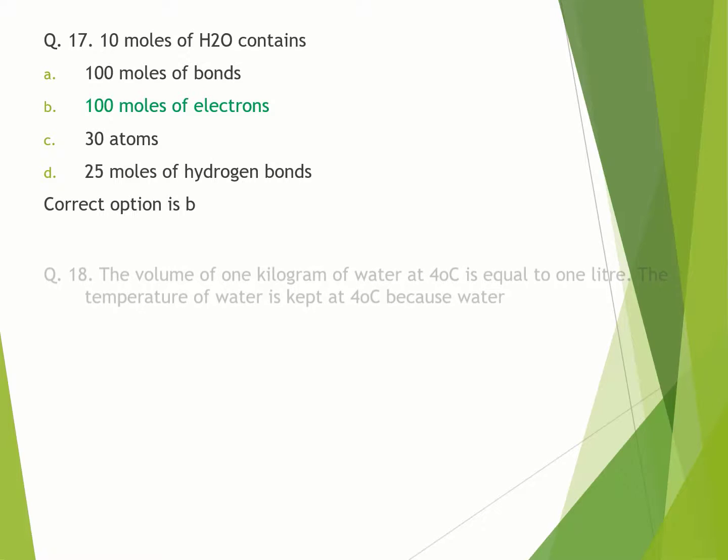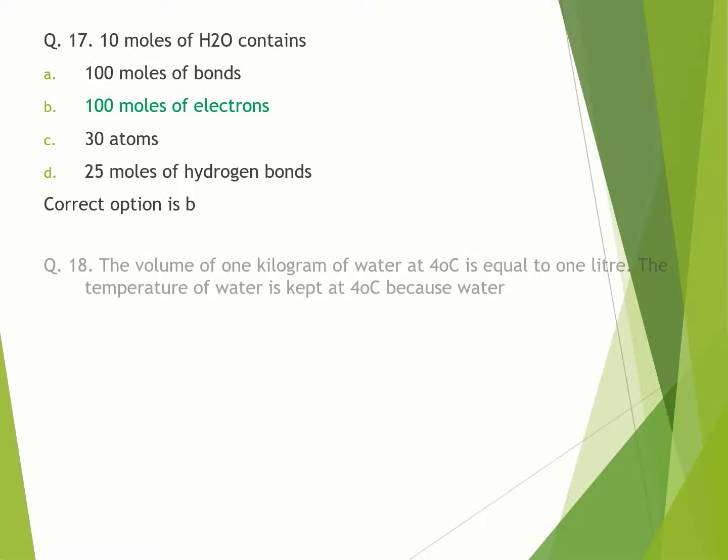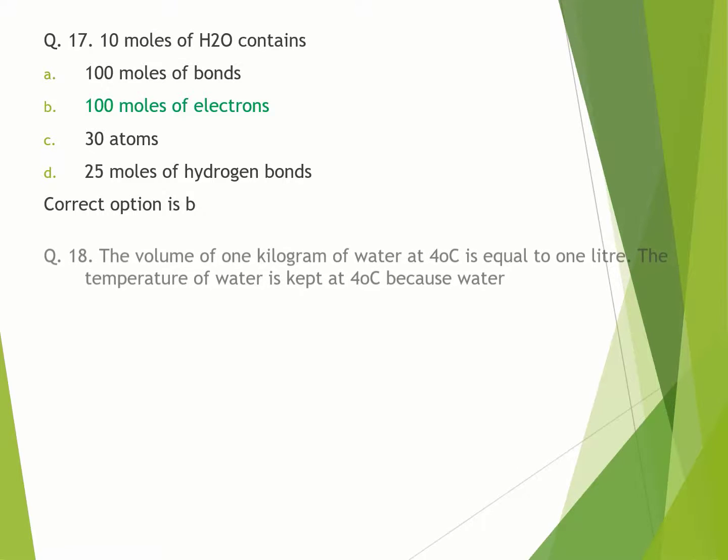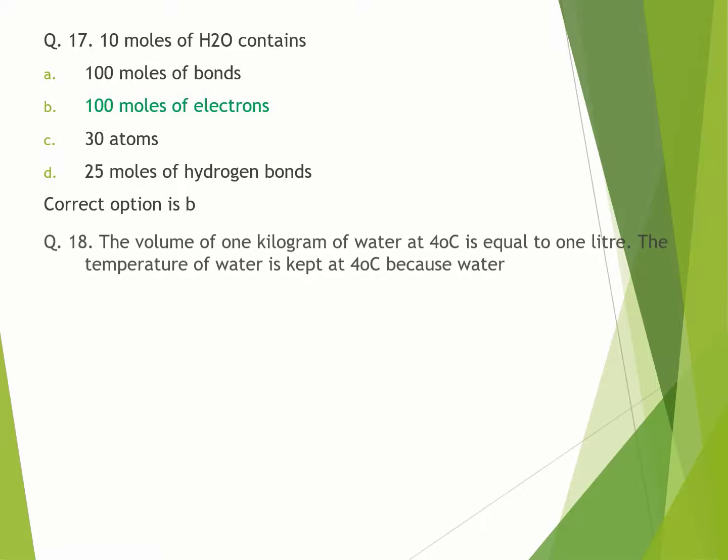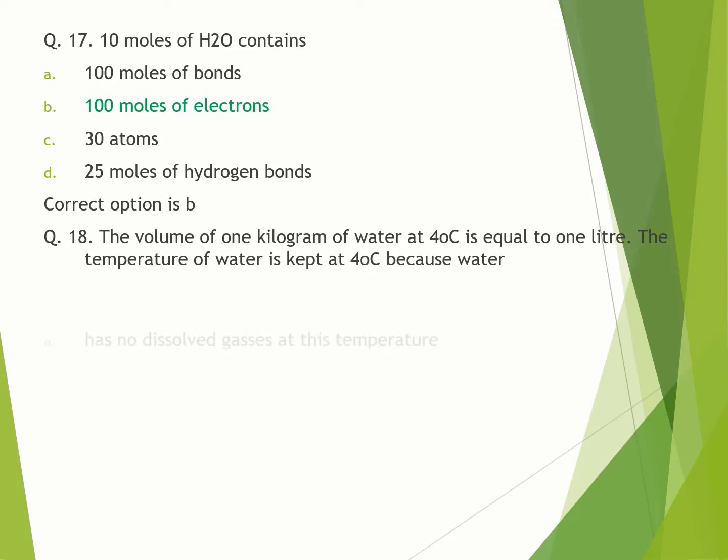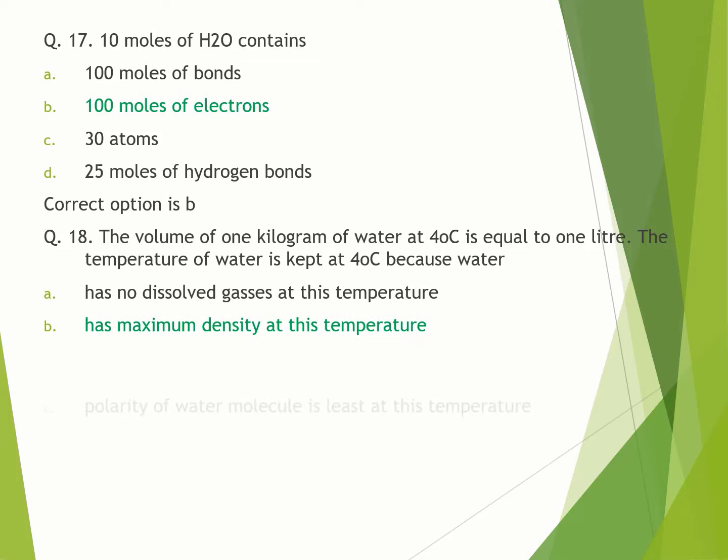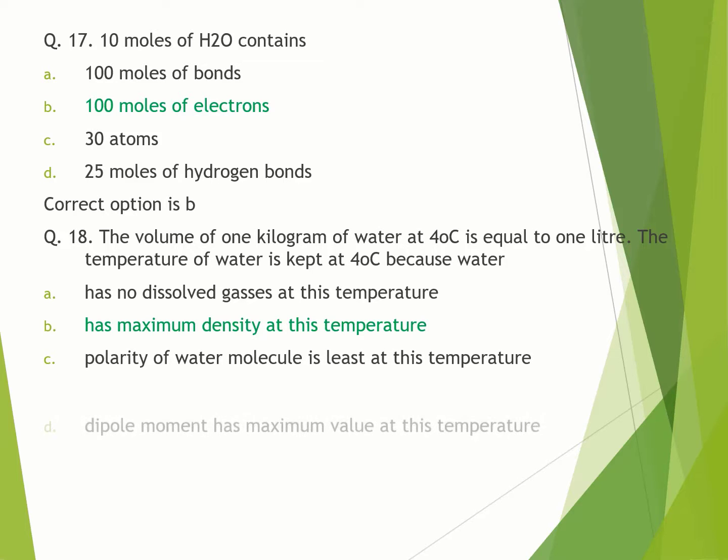Question number 18. The volume of 1 kilogram of water at 4 degrees Celsius is equal to 1 liter. The temperature of water is kept at 4 degrees C because water: A. has no dissolved gases at this temperature. B. has maximum density at this temperature. C. polarity of water molecule is least at this temperature. D. dipole moment has maximum value at this temperature. Correct option is B.